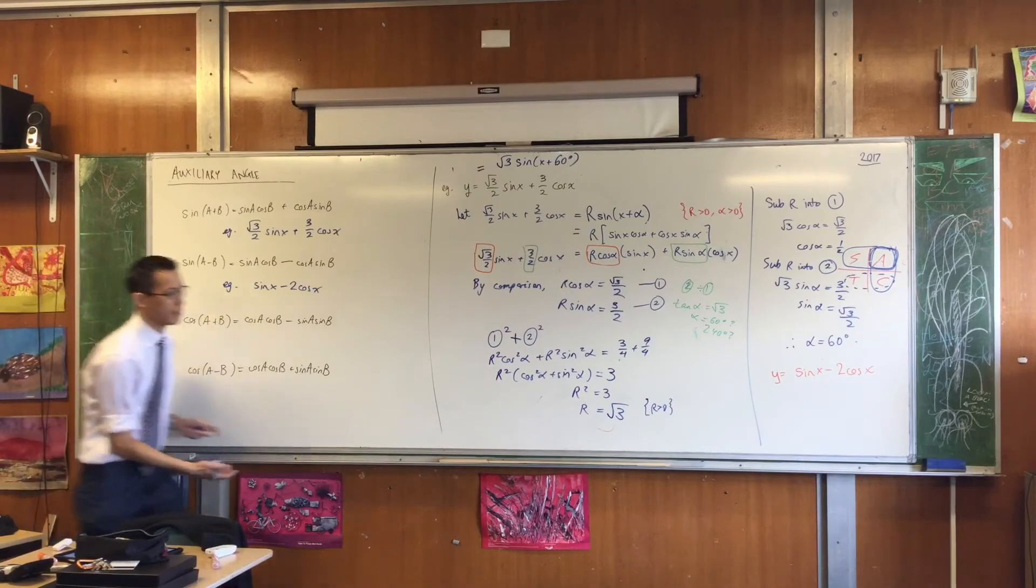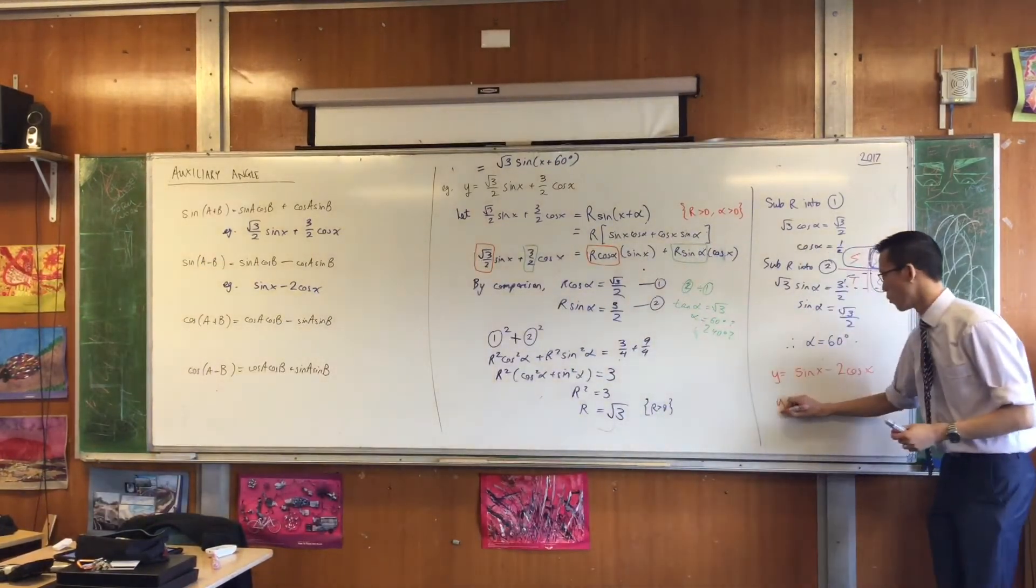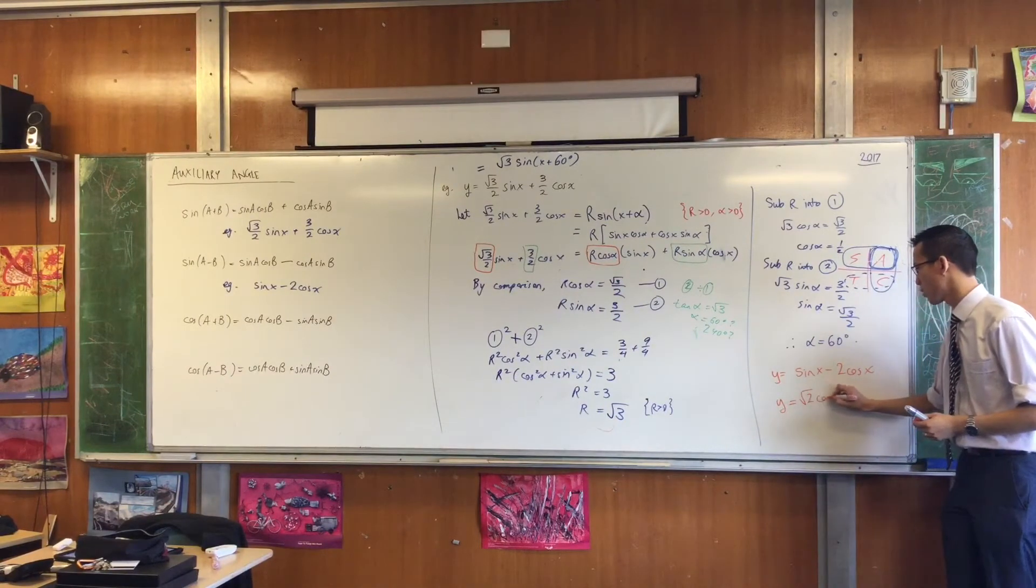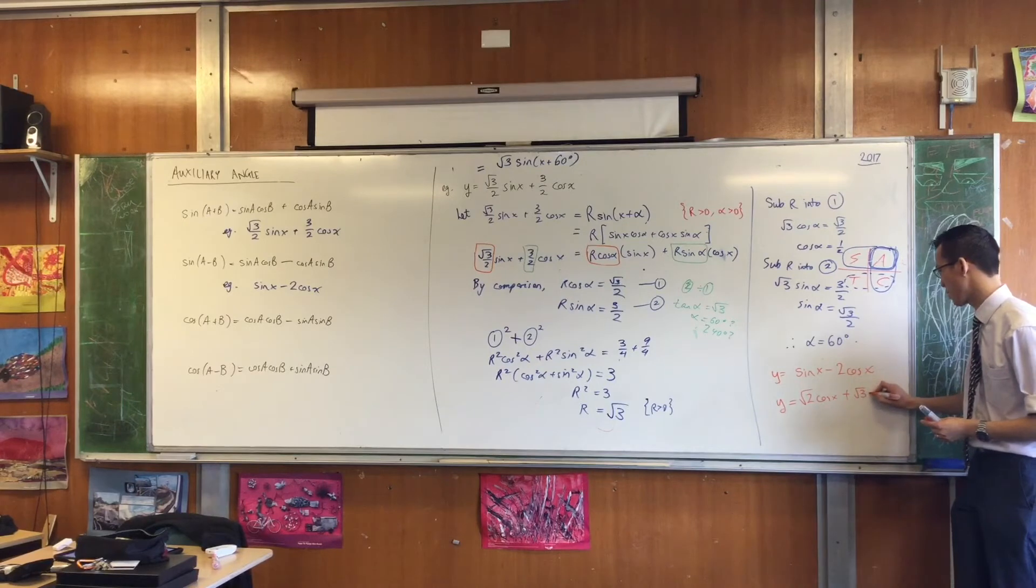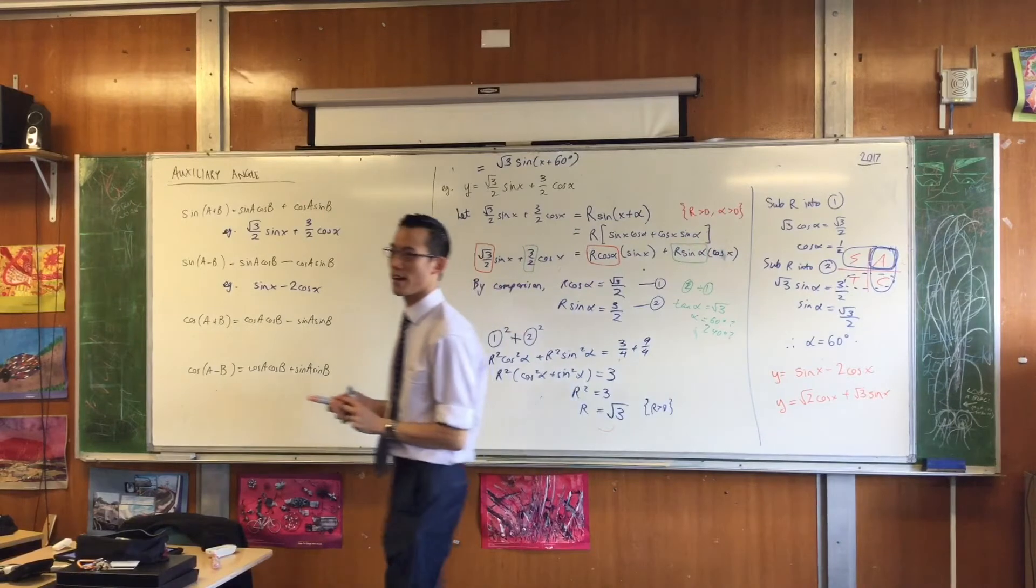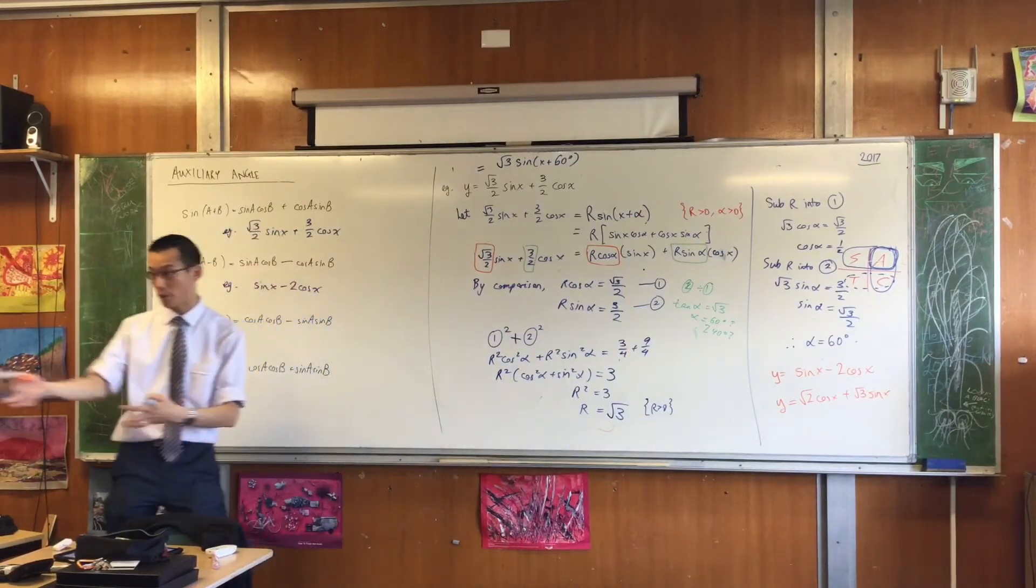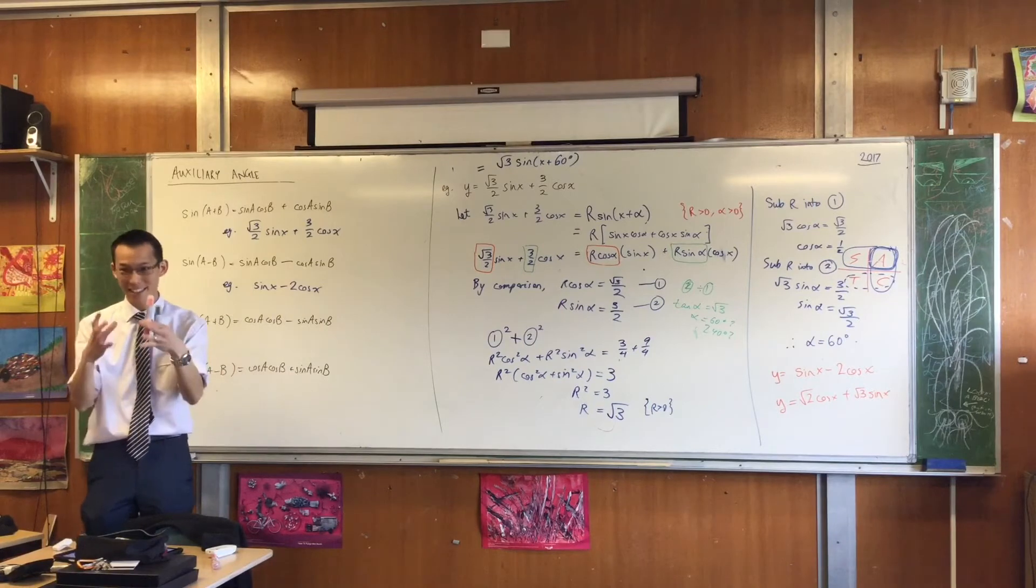Again, if I said to you, y equals root 2 cos x plus, let's go root 3 sine x. By the way, the reason why you see so many root 2s and root 3s flying around is because the exact values for your trig functions, they have root 3s and root 2s inside them.